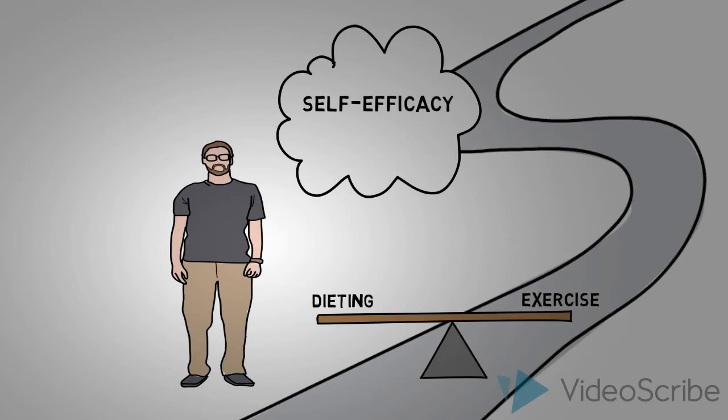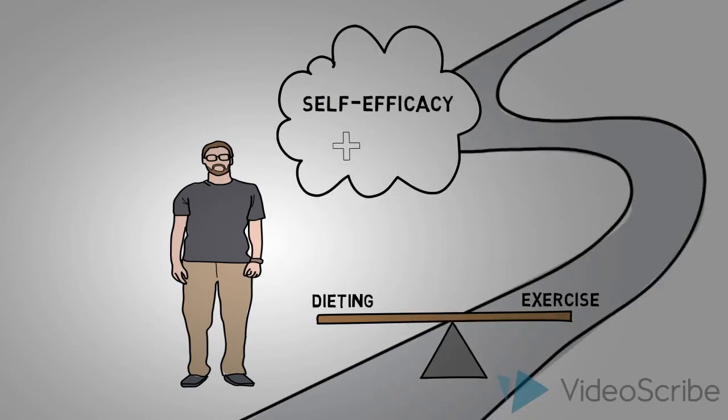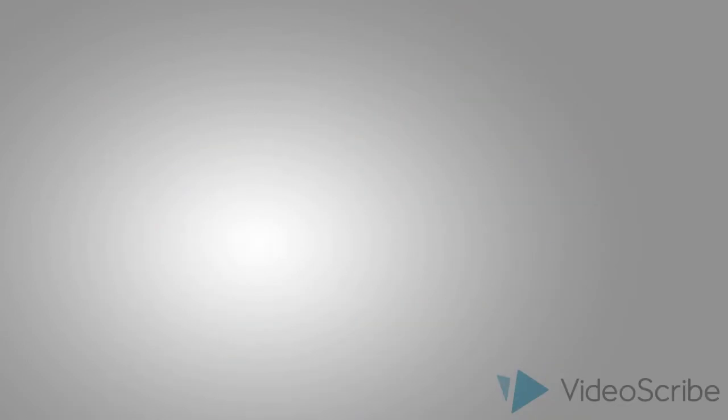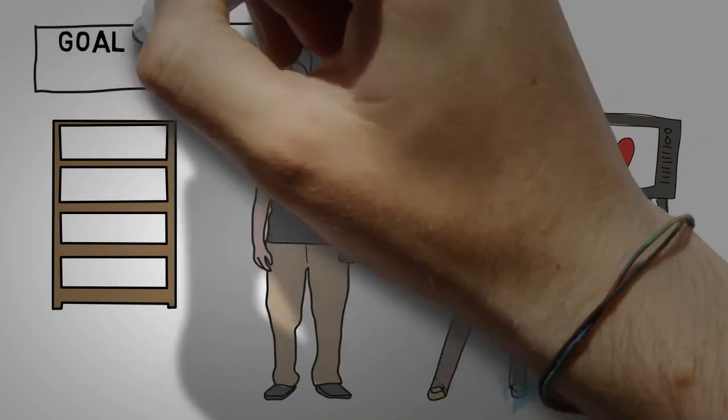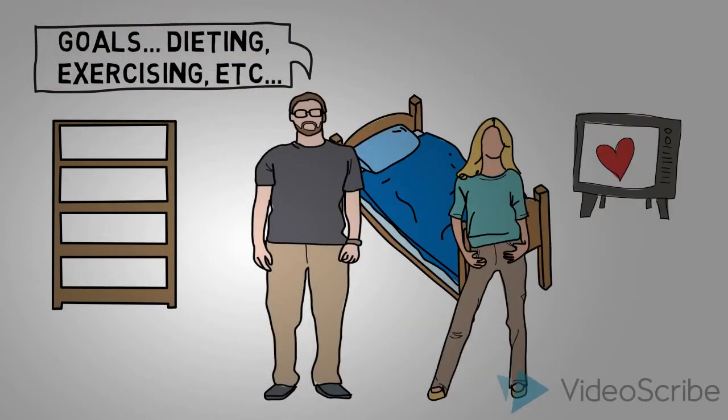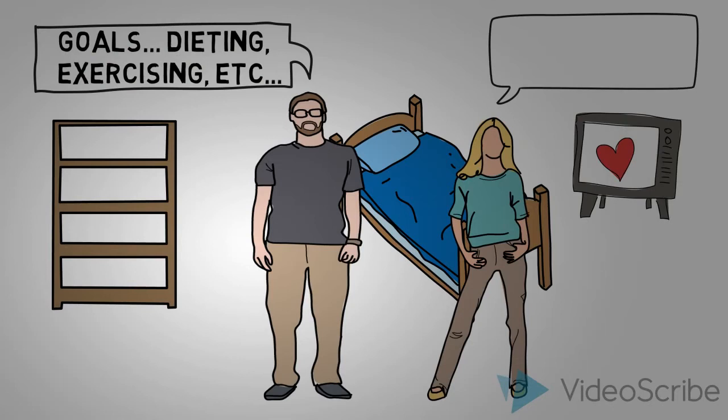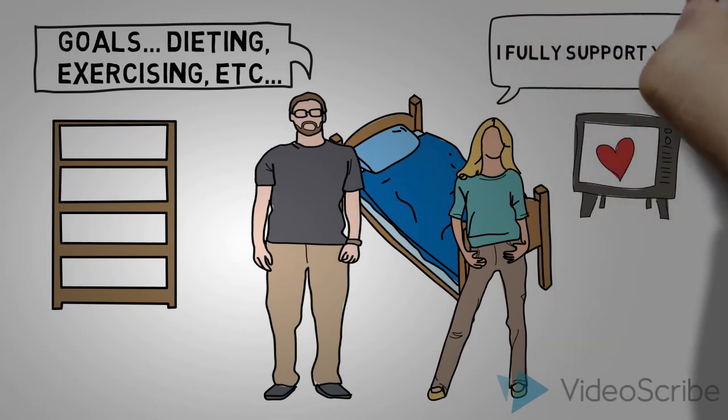His self-efficacy begins to increase as he goes through the next processes of change, social and self-liberation. He discusses his future goals of losing weight with his wife and coworkers and realizes that the people around him would support this change and then begins to believe in himself.